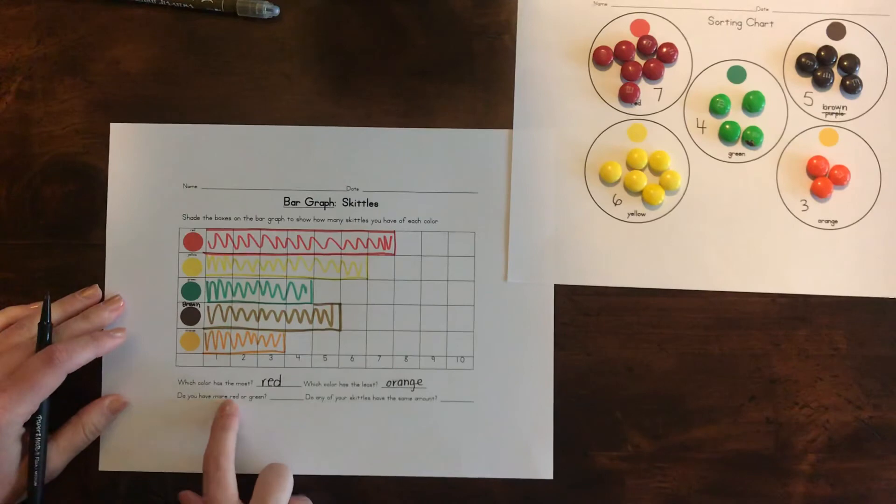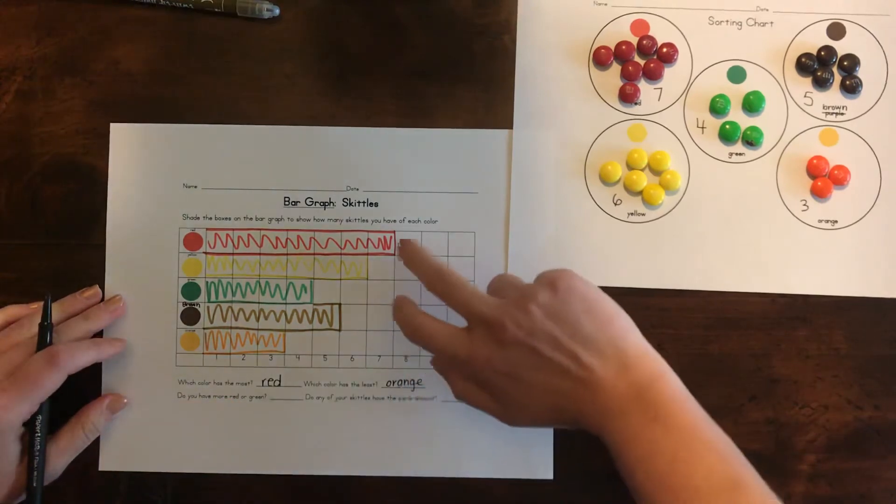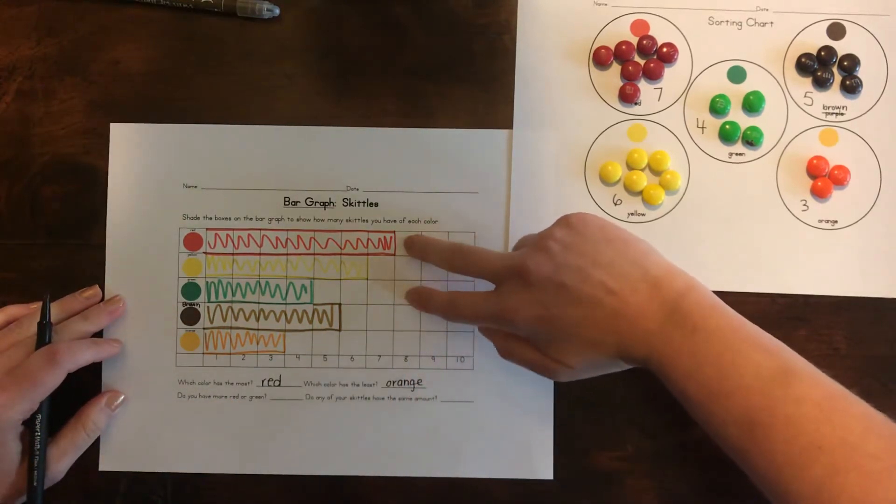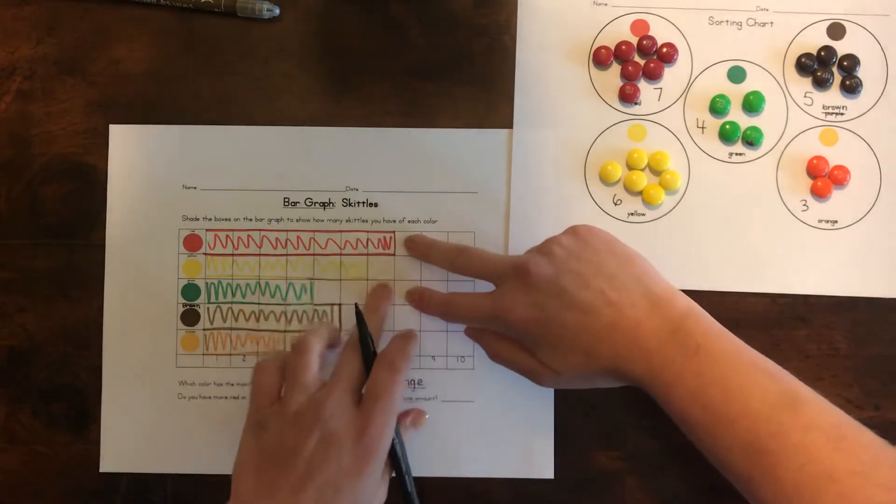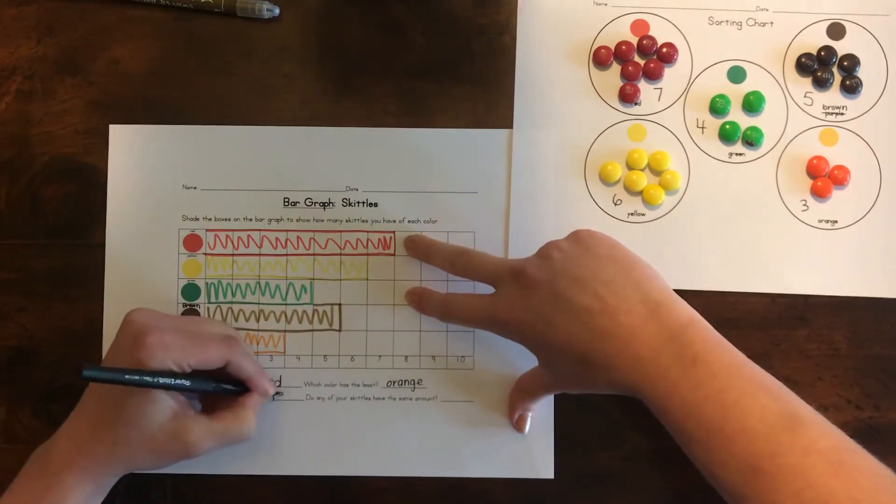Now, do we have more red or green? So let's look at red and green. Is there more of red or green? Well, I see that the red goes out farther. So I know we have more red.